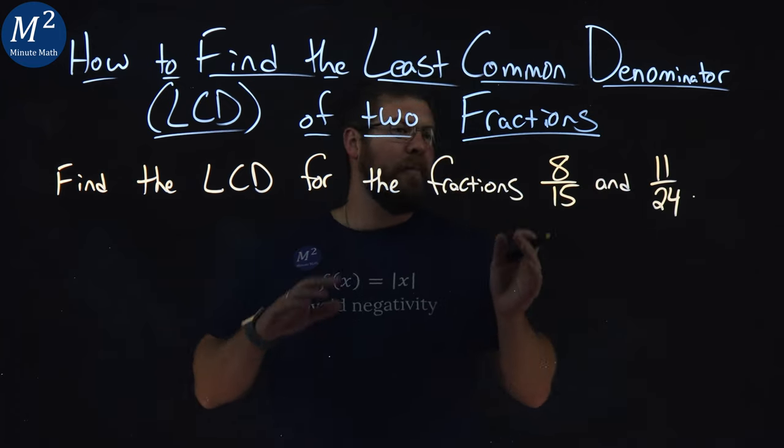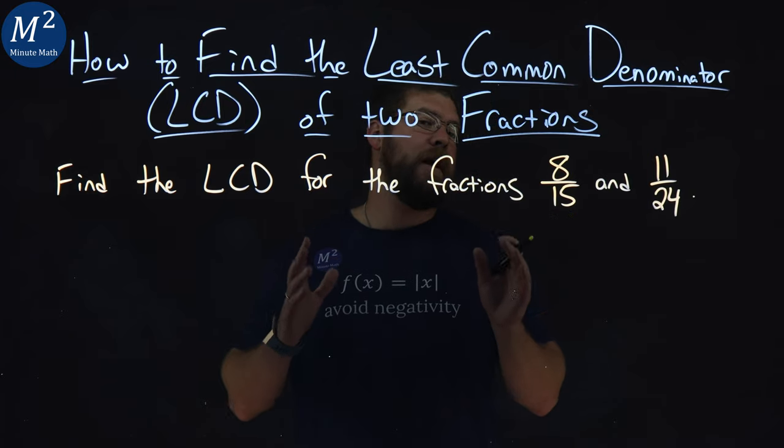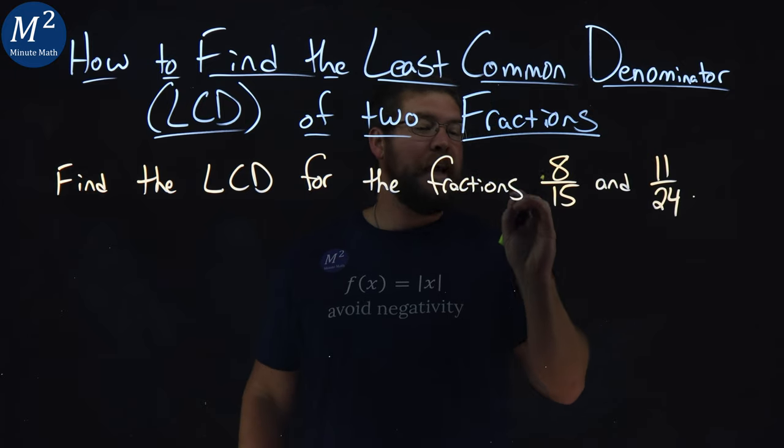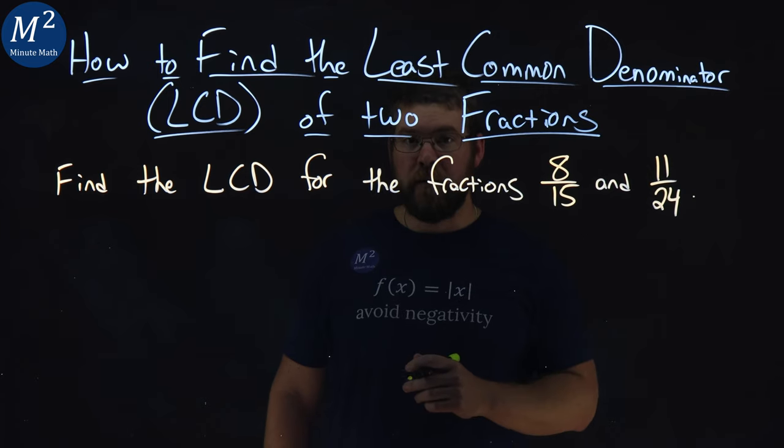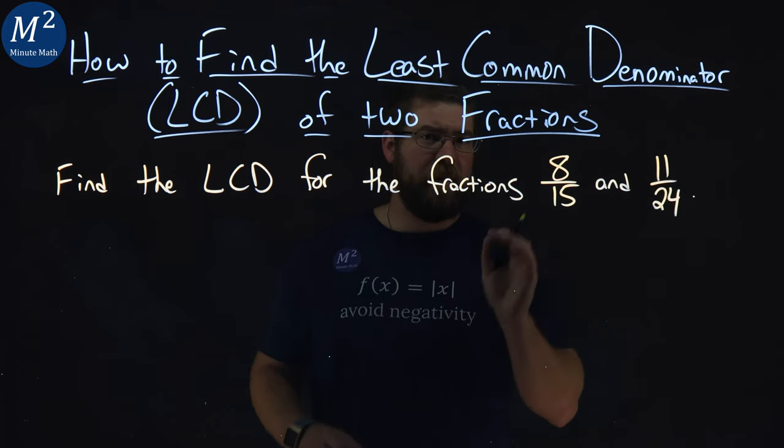If we remember from before, the LCD of two fractions is equivalent to the LCM, Least Common Multiple, of their denominators. So we find that, we get the LCD.